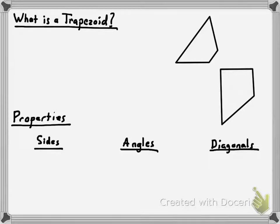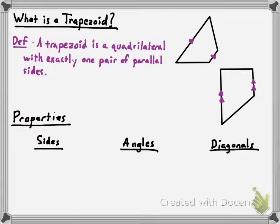So first of all, what is a trapezoid? I've got a couple pictures of trapezoids here. Your understanding ought to be that trapezoids have parallel sides — but don't parallelograms have parallel sides as well? Trapezoids specifically have one pair of sides that are parallel and another pair of sides that are not parallel. So in the first picture, you can see the parallel sides, but the other two sides are not parallel to one another. There's a definition written out: a trapezoid is a quadrilateral with exactly one pair of parallel sides.